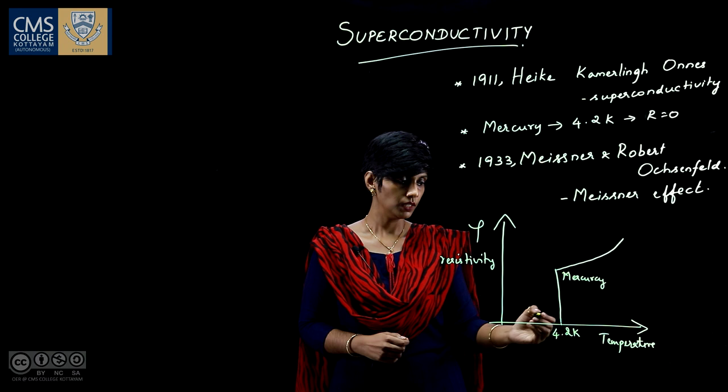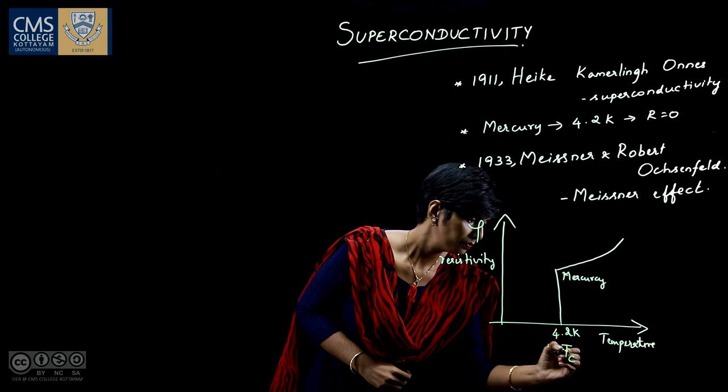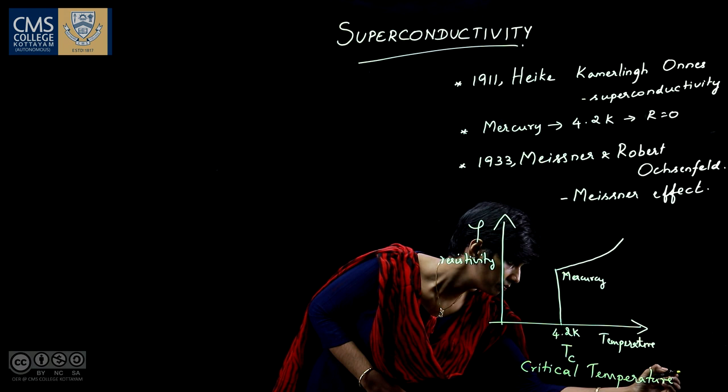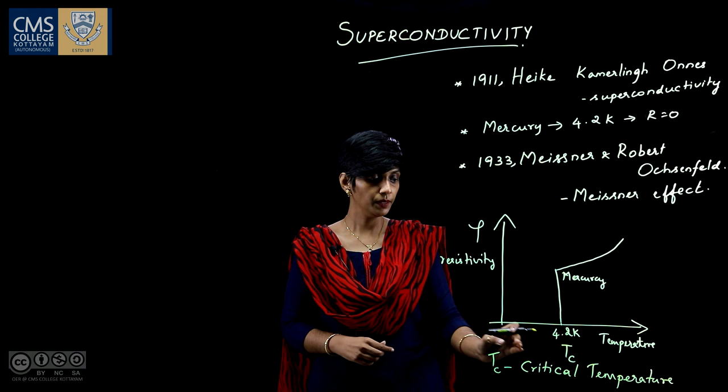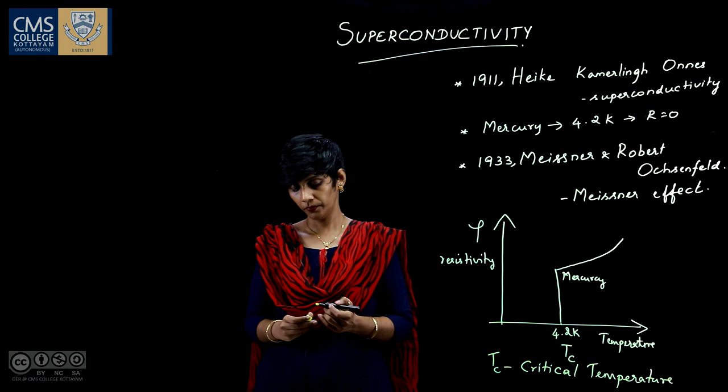The temperature at which the resistance becomes zero, or the resistance vanishes, is called the critical temperature. Above critical temperature, the material behaves as a normal material, and below critical temperature, it behaves as a superconducting material. Onnes also observed that the superconducting property is reversible.